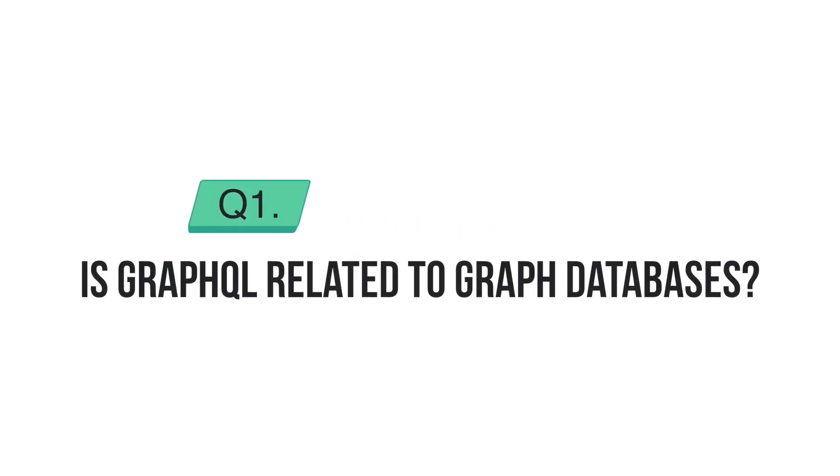Now let's address some common questions that float around the internet about GraphQL. The first common myth is: is GraphQL related to graph databases? The answer is no. I know it involves the word 'graph,' but this is similar to comparing Java and JavaScript, or car and carpet - they have nothing to do with each other. The word 'graph' in GraphQL simply means that queries are able to crawl into the REST API and pick up selective information. The 'QL' stands for query language.